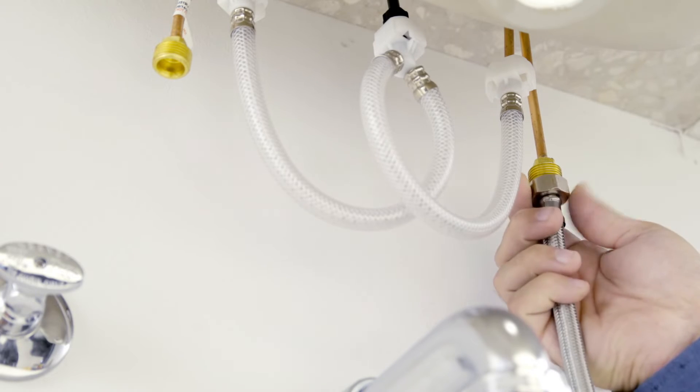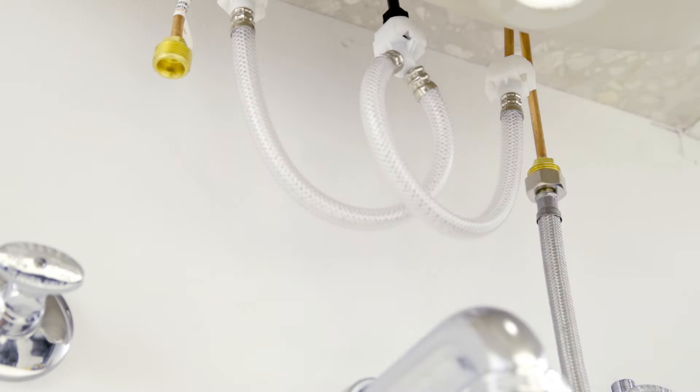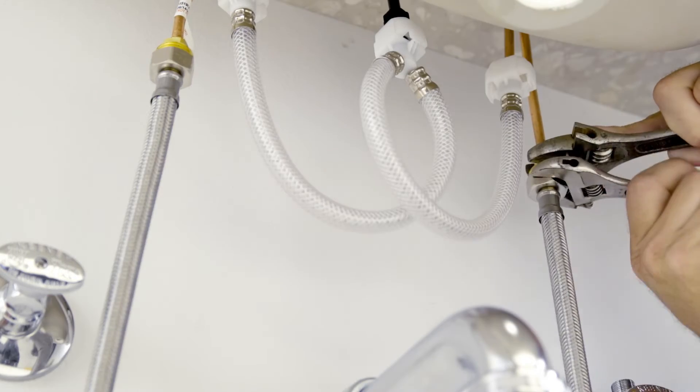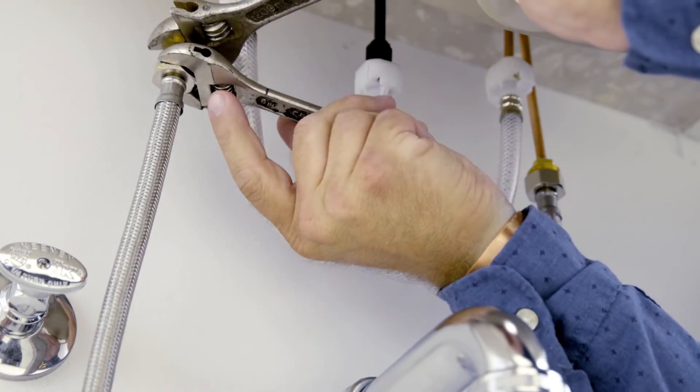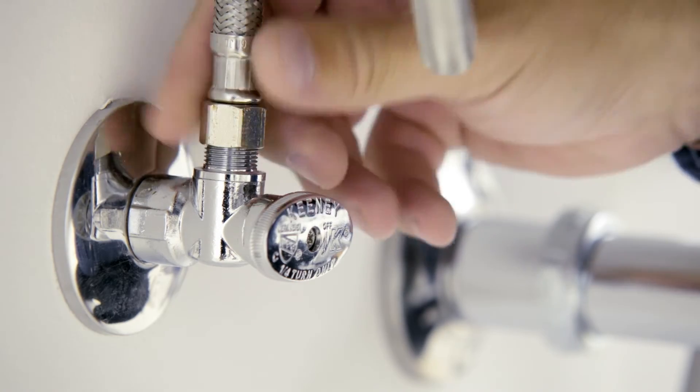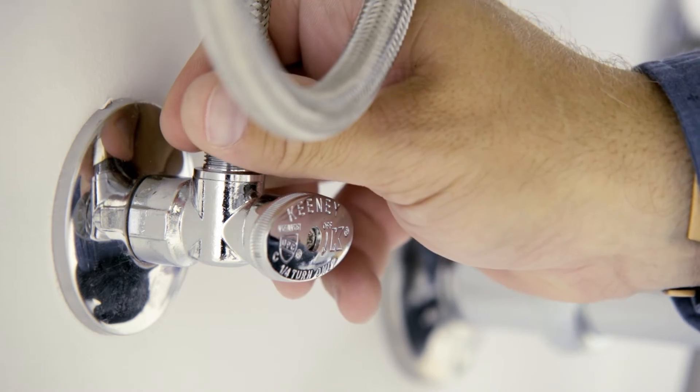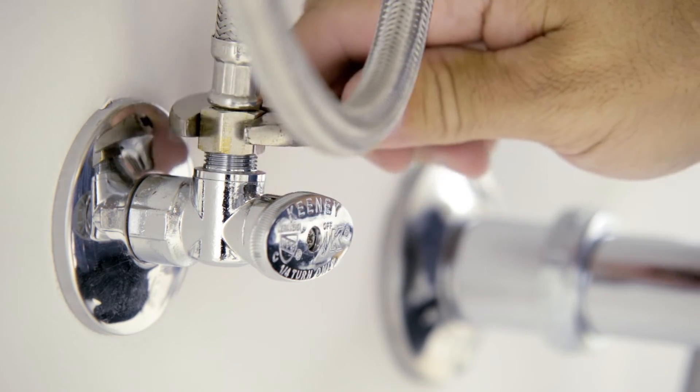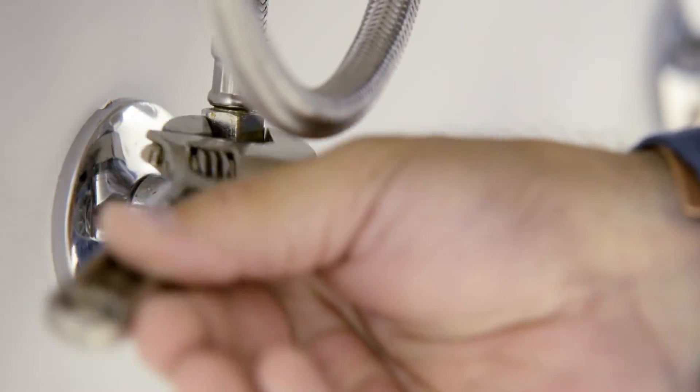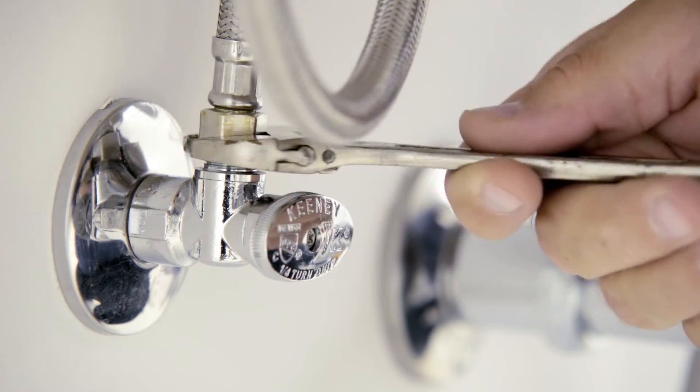Secure the supply hose to the valves. Secure the metal nut on the faucet supply hoses to the supply valve connections and hand tighten. Then tighten one additional revolution with the wrench. Make sure you do not over tighten.